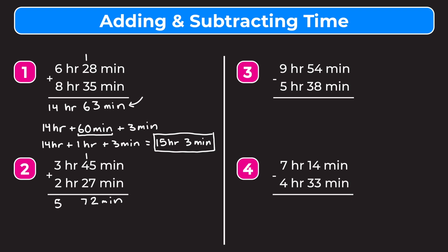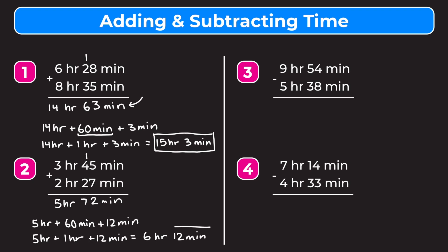We add the hours: 3 plus 2 gives us 5 hours. Since 72 minutes is more than 60, we break it up: 5 hours plus 60 minutes plus 12 minutes. Rewriting 60 minutes as 1 hour gives us 5 plus 1 equals 6 hours, with 12 minutes remaining. Our answer is 6 hours and 12 minutes.